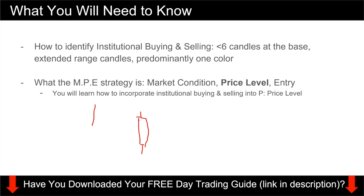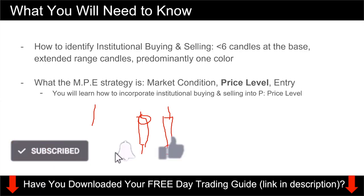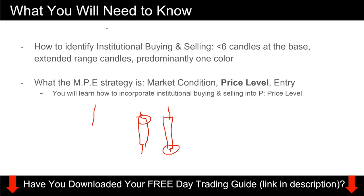If it's a bullish candle, you want it to close near the top of the range. If it's a bearish candle, you want it to close near the bottom of the entire candle's range. You also want the candles to be predominantly one color — if it's bullish institutional buying, most candles should be bullish; if bearish, most candles should be bearish. I won't go into more details here since all of this is documented in the other videos.